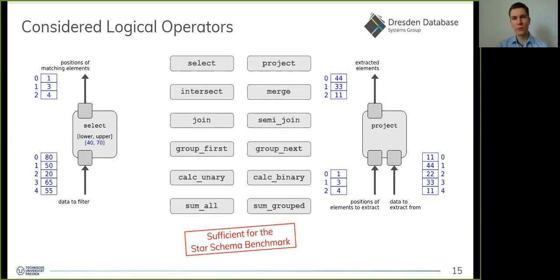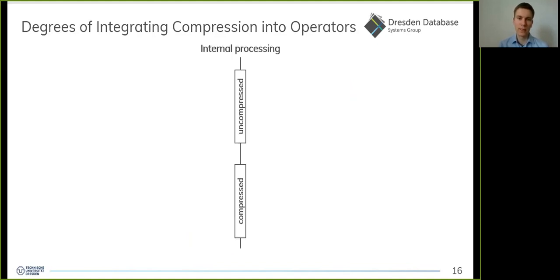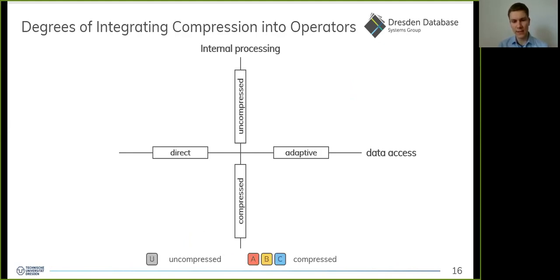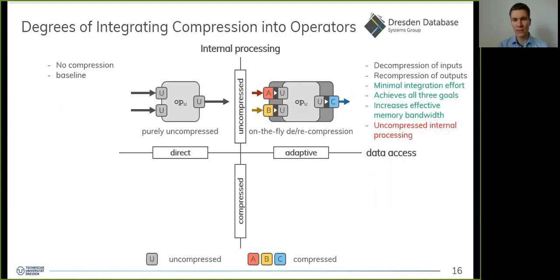The question is how to integrate compression into columnar operators for integer sequences. We identified four degrees of integration resulting from two orthogonal dimensions. The first dimension is internal processing inside the operator, which could happen either on uncompressed or compressed data. The second dimension is data access, which could happen directly in the format the data is materialized in, or adaptively to change the compressed representation on the fly. We use gray to denote uncompressed data and colors to denote compressed data in different formats. The first degree — purely uncompressed processing — is trivial and used only as a baseline.